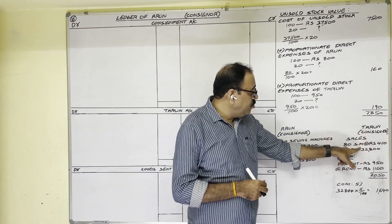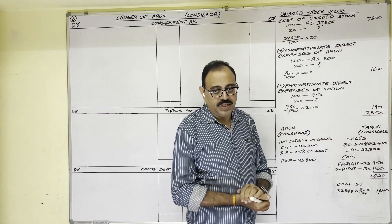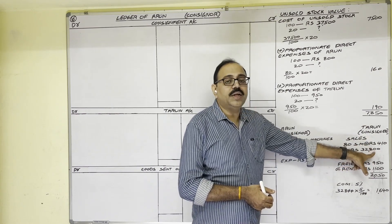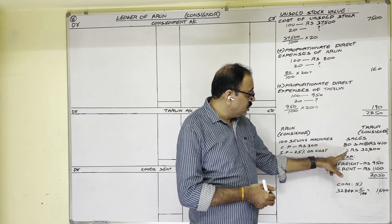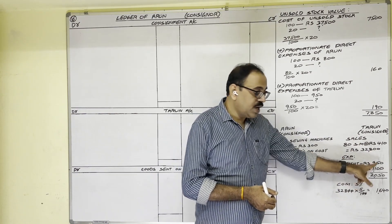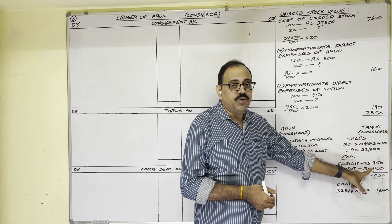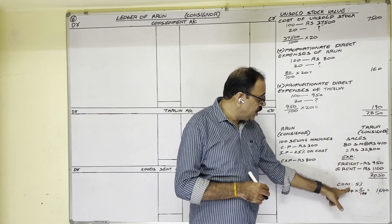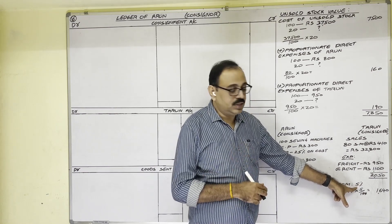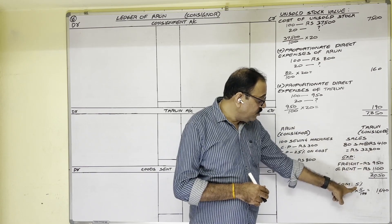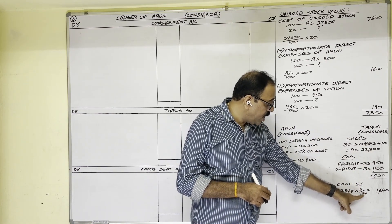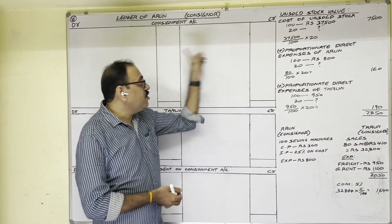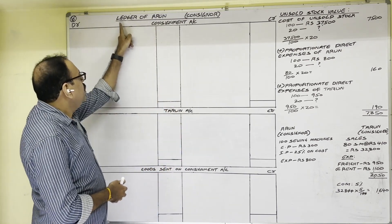The consignee sold 80 machines at 410 rupees each, so total sales amount is 80 × 410 = 32,800 rupees. To sell these goods, the consignee incurred freight expenditure of 950 rupees and godown rent of 1,100 rupees, so consignee's total expenditure is 2,050. The consignee is entitled to a commission of 5 percent on sales: 32,800 × 5/100 = 1,640 rupees. We have to prepare ledger accounts in the books of the consignor.